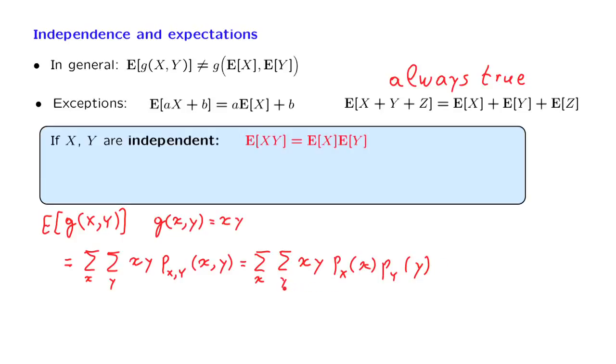And now, when we look at the inner sum over all values of y, we can take outside the summation those terms that do not depend on y, so this term and that term. And this is going to yield a summation over x of x times the marginal PMF of x, and then the summation over all y of y times the marginal PMF of y.